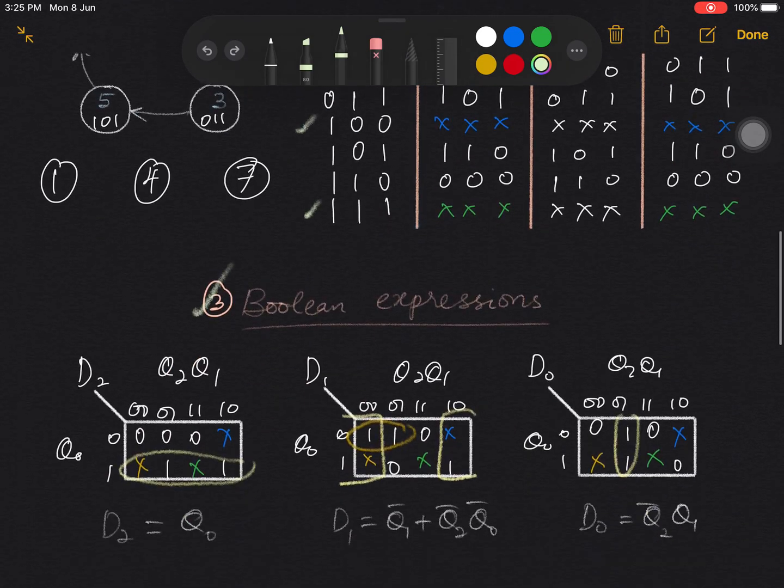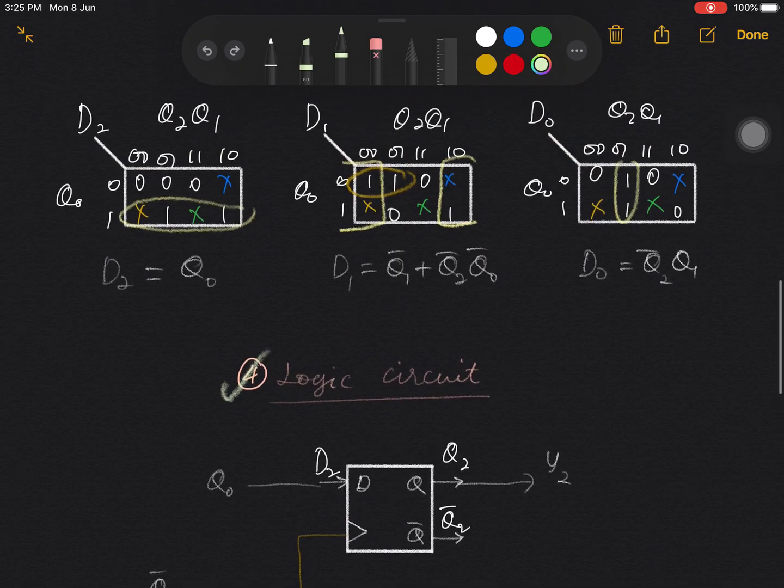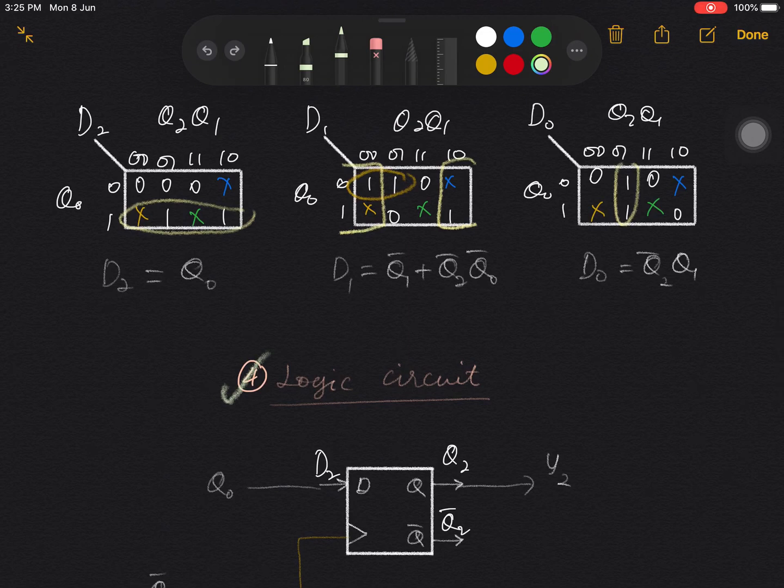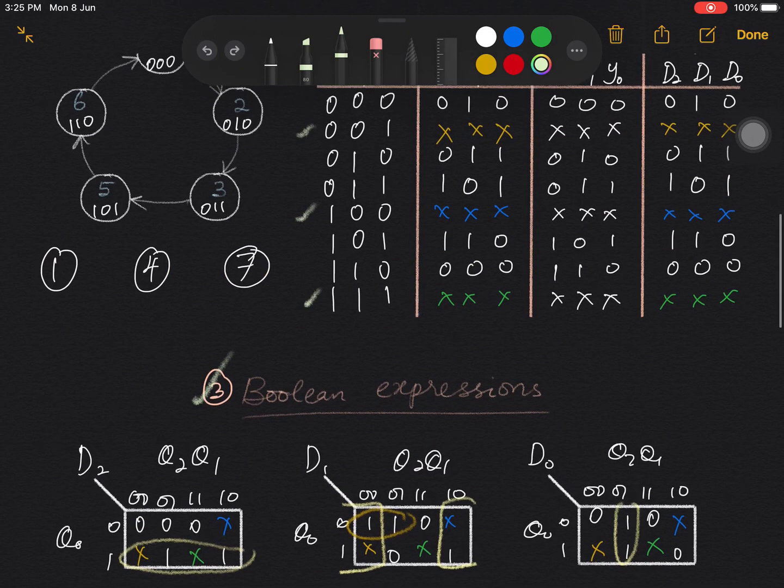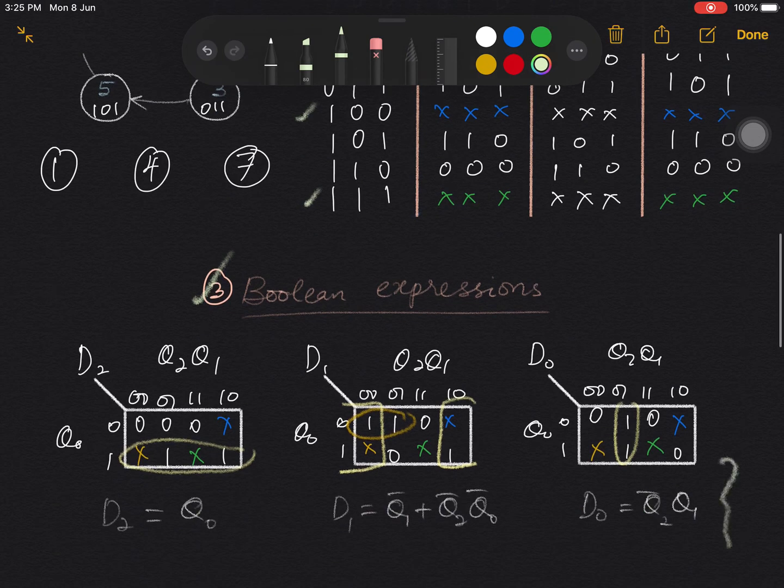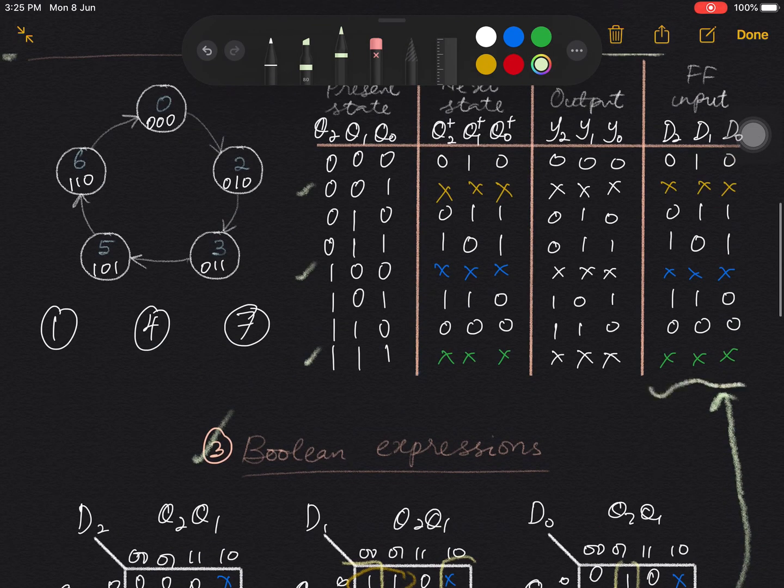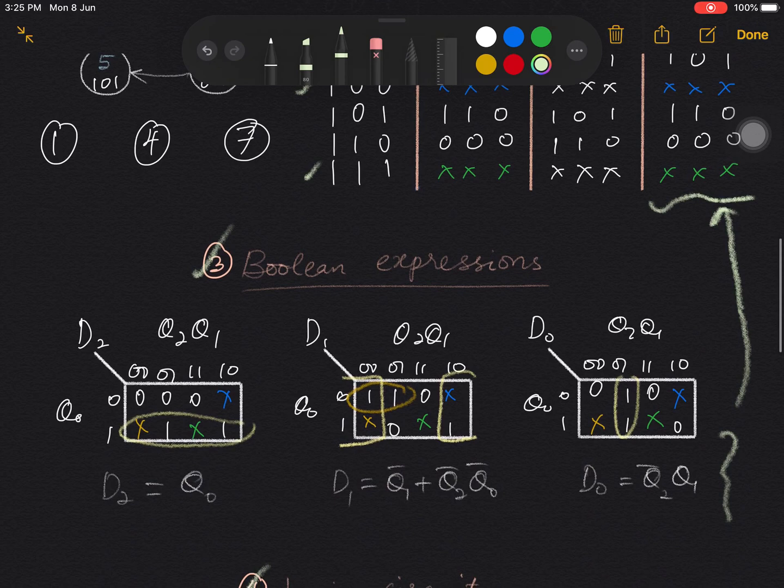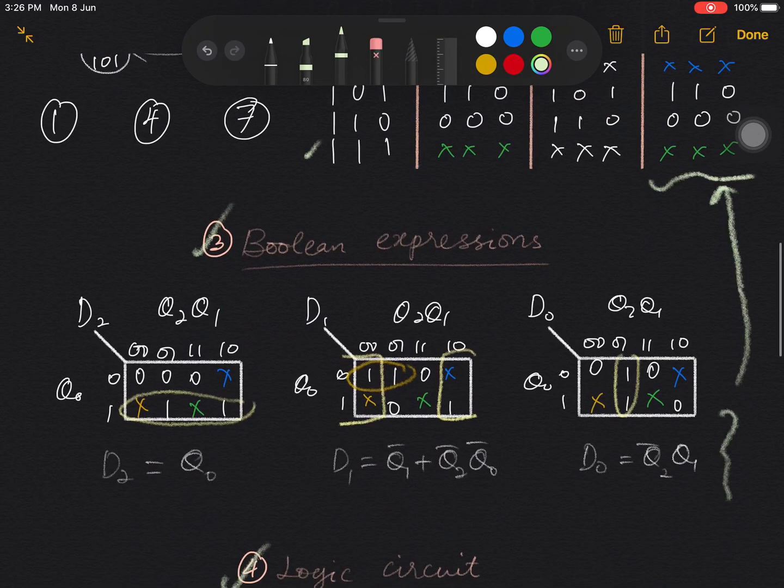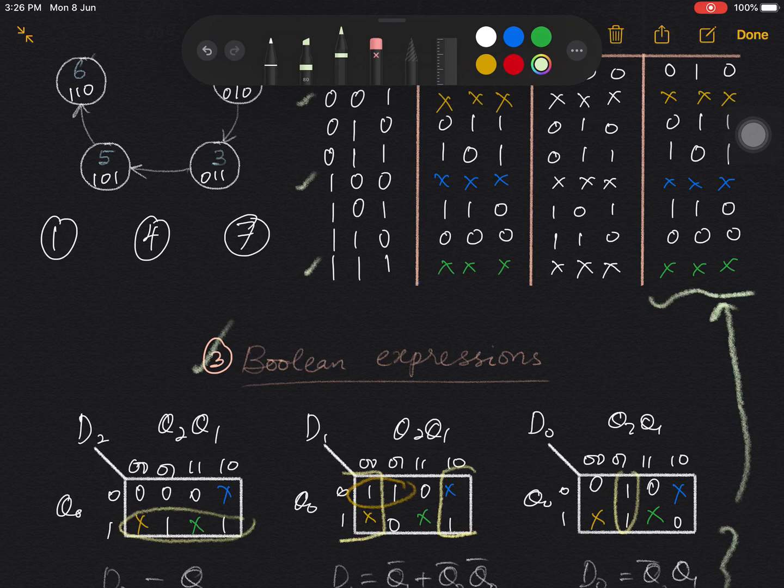So these Boolean expressions are the inputs of the d-flip-flops that correspond to this. So all these expressions correspond to this column. So each K-map is filled with three don't cares, such that the yellow don't care, this, this, and this, corresponds to the state 1. The blue don't care, this, this, this, corresponds to state 4.